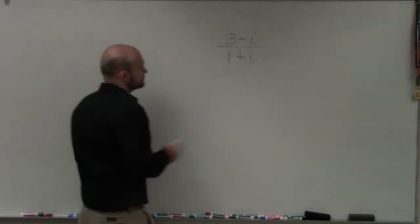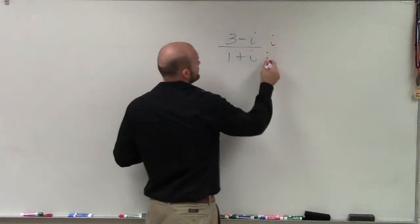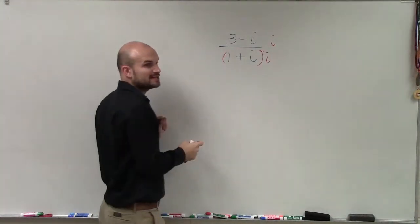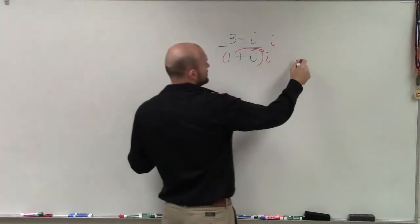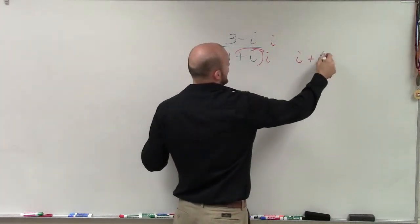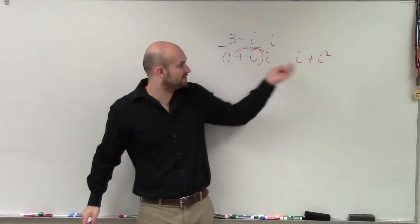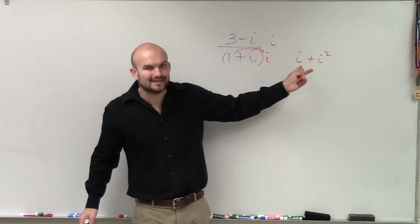Because if you multiply by i on the top and the bottom, remember, you have to apply the derivative property. So therefore, by applying the derivative property, you get i plus i squared. You don't have an i for this term anymore, but now you just created an i.